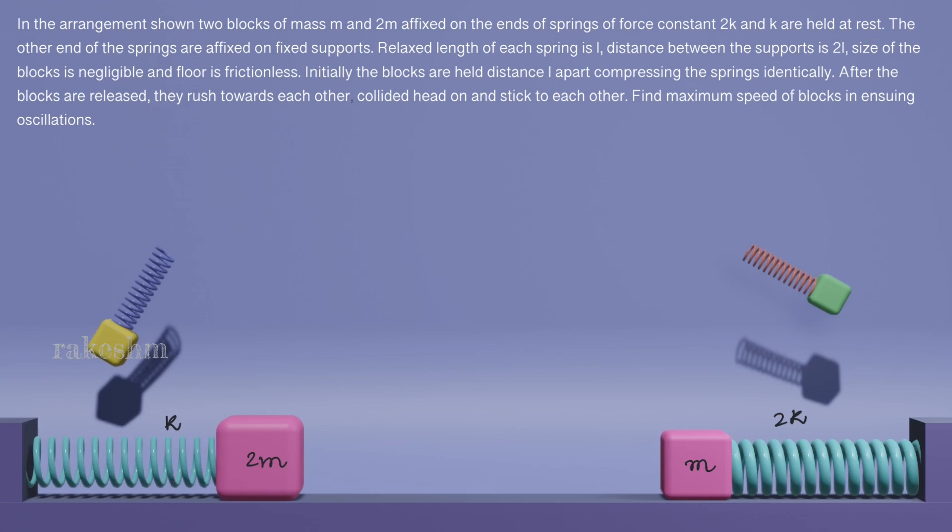Next, the other end of the springs are affixed on fixed supports. So these two ends of the springs are fixed to these supports. Relaxed length of each spring is L. Distance between the supports is 2L.